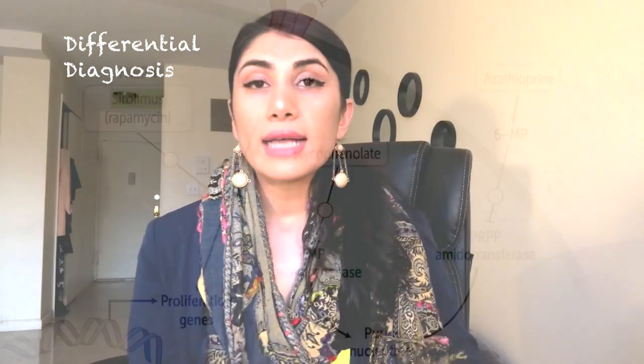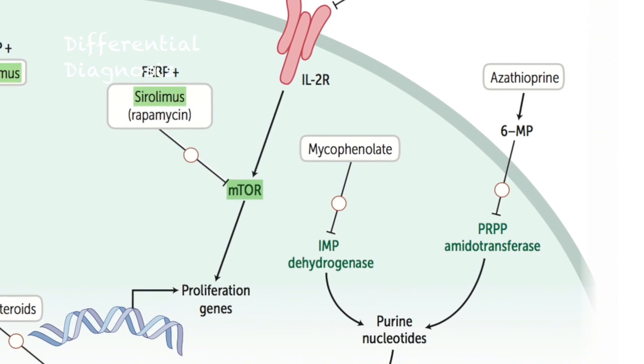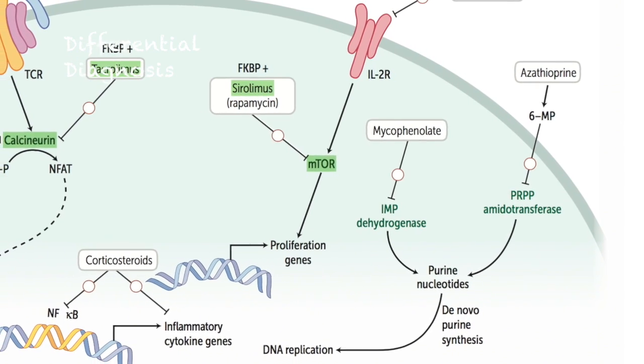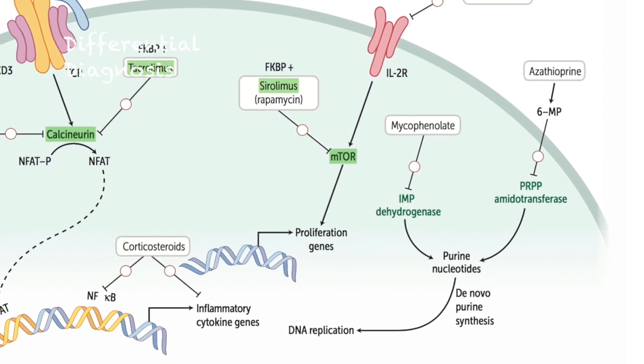Azathioprine is another answer choice you need to know. Azathioprine inhibits purine synthesis — it's a purine analog. It converts into 6-mercaptopurine (6-MP), an important metabolite. The toxicity of azathioprine is exacerbated by allopurinol — a very common exam question — so never use those two together. Adverse effects of azathioprine include dose-dependent diarrhea, leukopenia, and hepatotoxicity. It does not cause gingival hypertrophy or hirsutism.